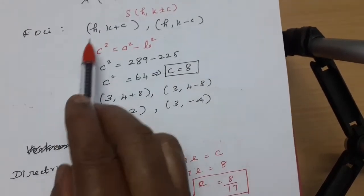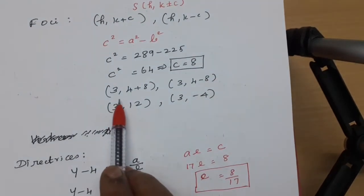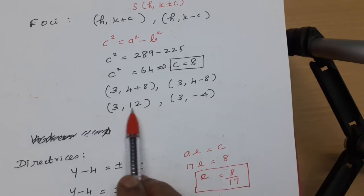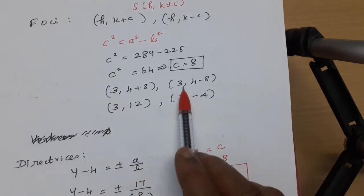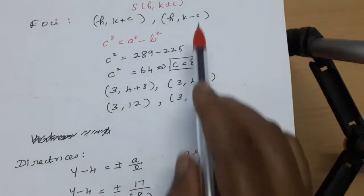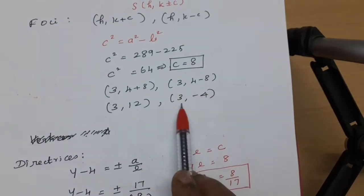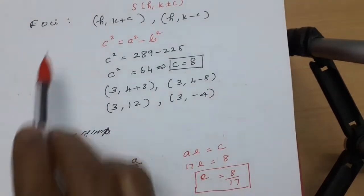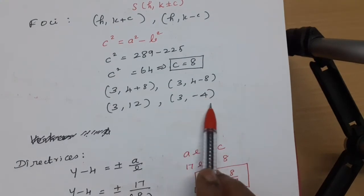Substituting h equals 3, k equals 4, c equals 8: the foci are (3, 4+8) equals (3, 12), and (3, 4−8) equals (3, −4).